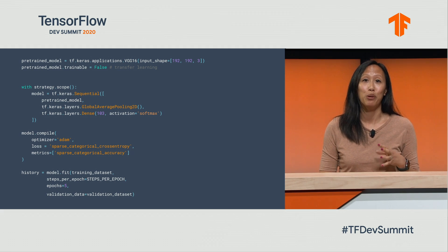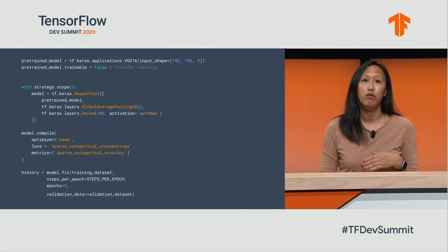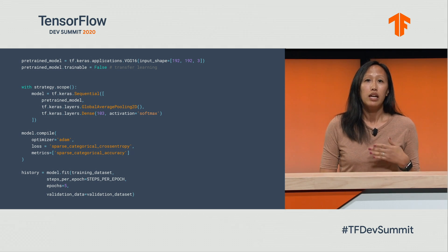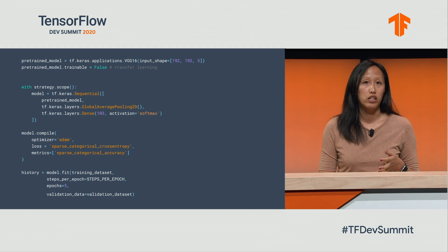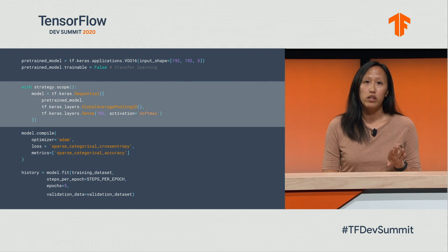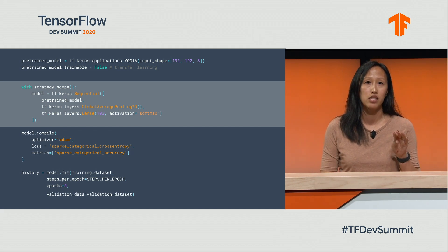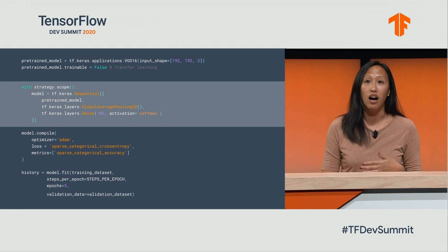This code does some real work. Here we load up a VGG16 for some transfer learning, compile our model, and start training and validating. We're using a standard distribution strategy that was made possible by that previous code that automated the strategy based on the accelerator used. Note the 'with strategy.scope' block — that's basically saying, whichever type of parallelization you're doing here, this is the process to parallelize. Now our model will be built and trained on the accelerator.